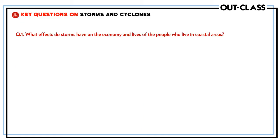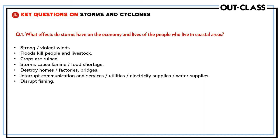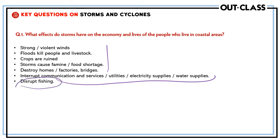Regarding the effects of storms and cyclones on the economy and lives of coastal people: the winds are very violent and can blow away rooftops and houses. A lot of people are displaced, livestock is killed, and crops are ruined. They can cause shortages and destroy houses, factories, and bridges. Communication services are disrupted, so medical services and electric and water supplies are cut off. The fishing industry is also highly affected as fishermen cannot go out to sea during storms.